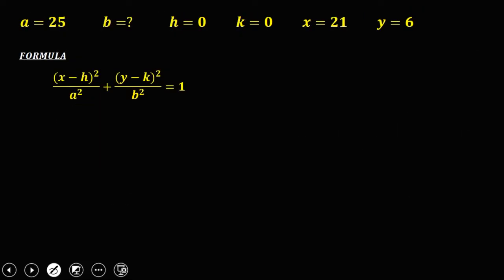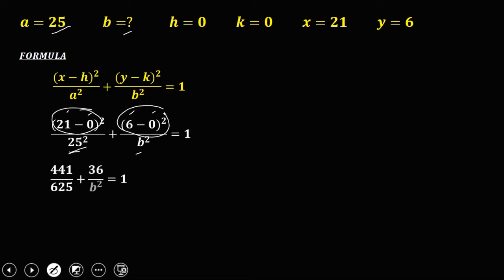So substitute now the values. X is 21, y is 6, h and k are 0. Then a² is 25², and b is unknown, so that's b². Then 21² is 441, 25² is 625, and 6² is 36 over b².